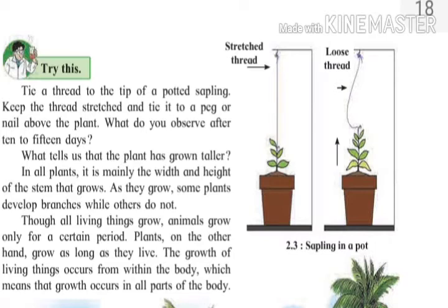Plants, on the other hand, grow as long as they live. Vanaspati ci wadhata maathra tiyan jivantha ase parenta hoch raha te. The growth of living things occurs from within the body. Sajivaan ci wadh shirraa cha antar bhagatun hodas te, manja shirraa cha sarvva bhagaan ci wadh hodas te.